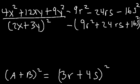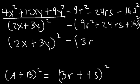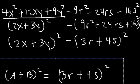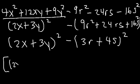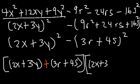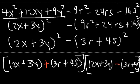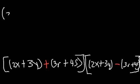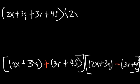Just like before, we can now use the difference of squares method. We have (2x + 3y)² minus (3r + 4s)², which factors as (2x + 3y + 3r + 4s) times (2x + 3y − (3r + 4s)). Distributing the negative sign, the final answer is (2x + 3y + 3r + 4s)(2x + 3y − 3r − 4s).